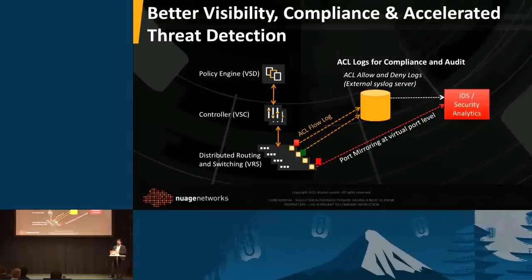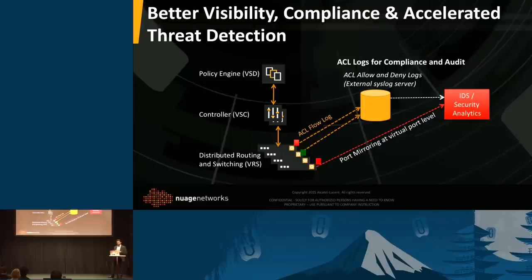The next thing is visibility. The three components are designed so that we actually collect from a distributed endpoint all of the information — whether it's ACL flow-based statistics — and report that back to syslog at the VSD, which is the policy manager. That gives you visibility on what's happening in the network. And because we're an open platform, you can bring in any partner solution that would help you further analyze that data.